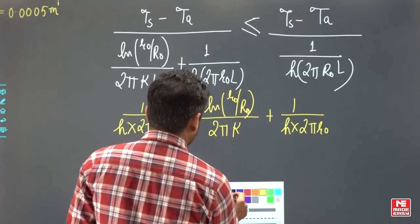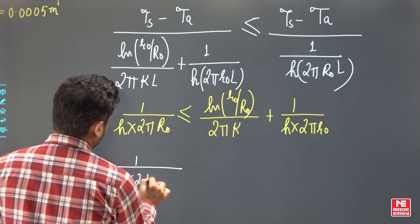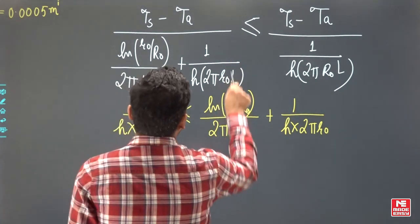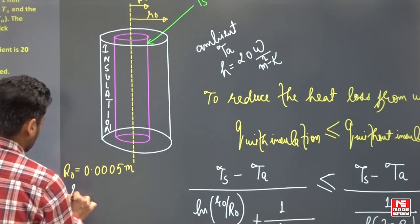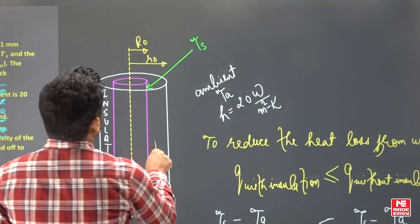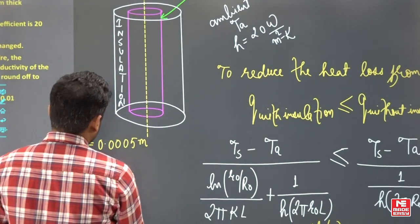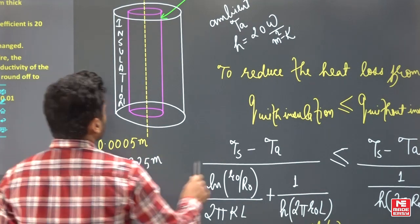From here if you put all the values, so 1 by, this is 20, 2 into π into capital R_O is how much? 0.0025, right? Small r_O is equal to what? If you add it, you will get 2 mm is the thickness, so you will get 0.0025 meter, small r_O.